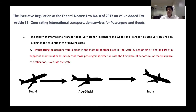The third point covers transporting passengers from a place in the state to another place in the state — by sea, air, or land — if it is part of the supply of international transport, and if either the first place of departure or the final destination is outside the state. For example, if your flight goes from Dubai to Abu Dhabi — both within UAE — and then onwards to India, the entire transaction is still classified as zero rated, provided you do not exit the flight or pass through passport control.